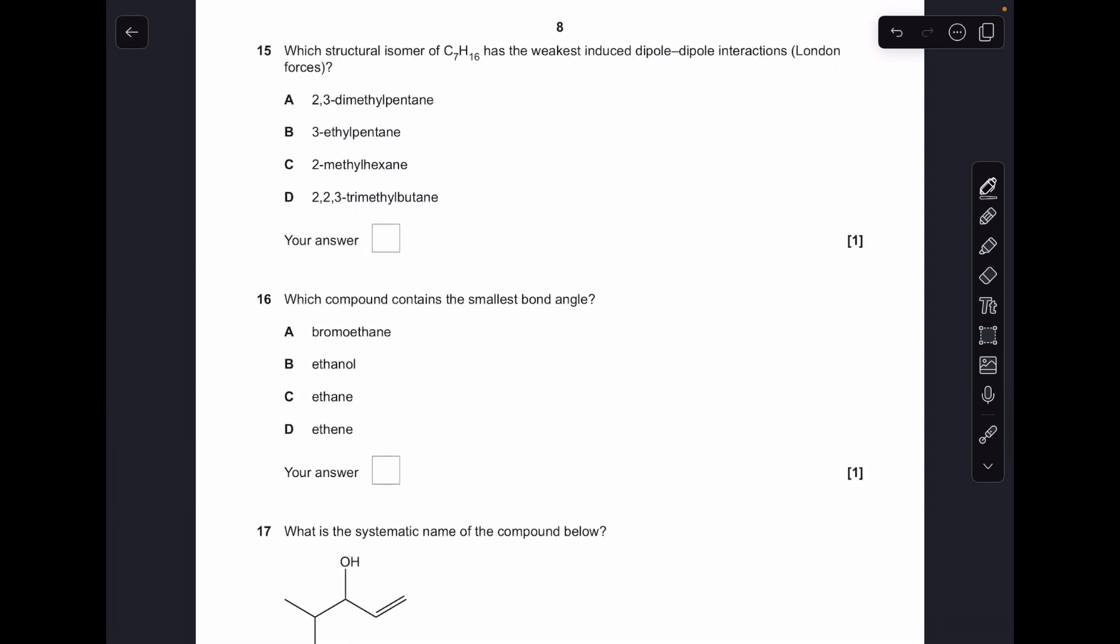Number fifteen: because these are all structural isomers, they've all got the same number of electrons, so it's going to be down to the amount of branching. More branching means weaker induced dipole-dipole interactions or London forces, so D has got the most branching, so that's the answer.